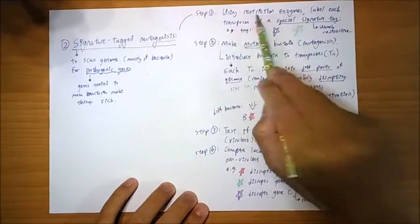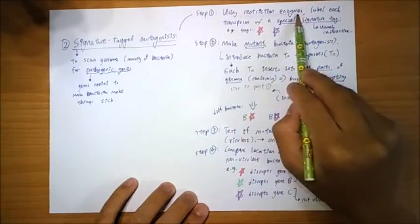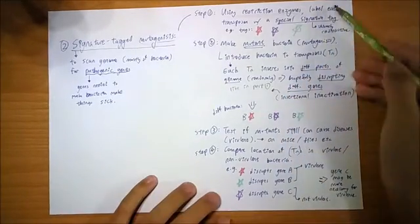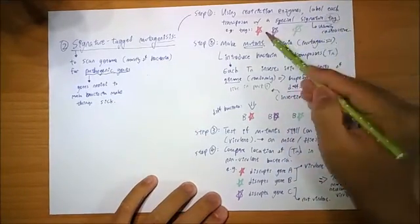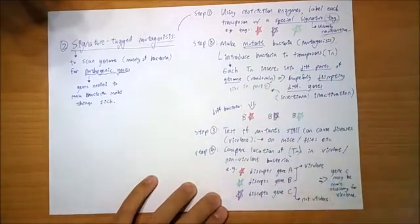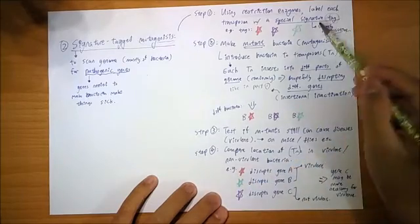To do this, first you use restriction enzymes. And you can insert special tags inside. So each of these tags are unique and usually radioactive. They label it with radioactive bases, nucleotides, radioactive nucleotides.